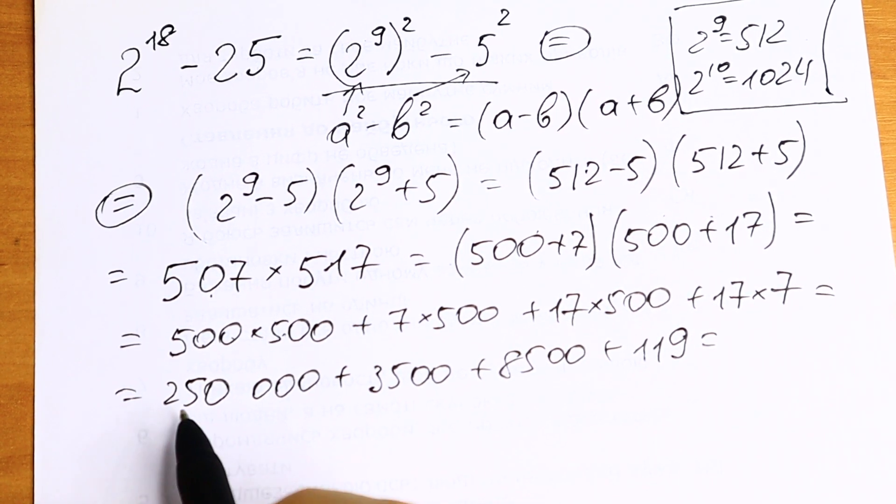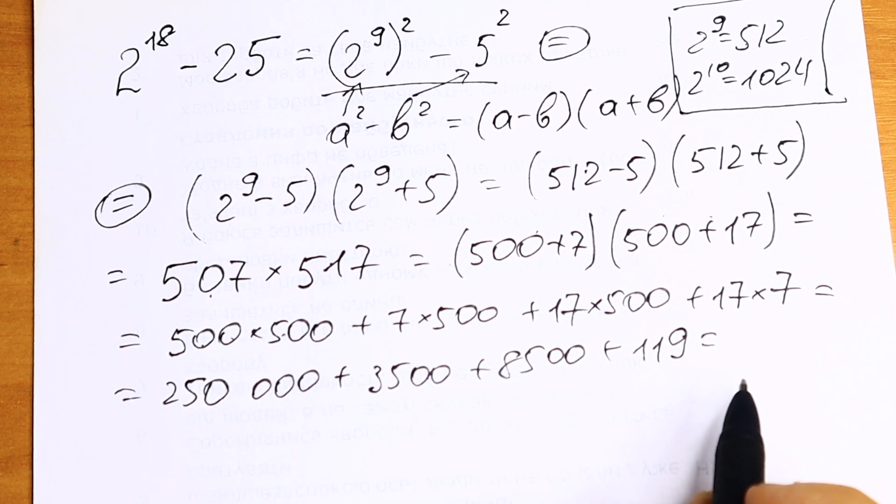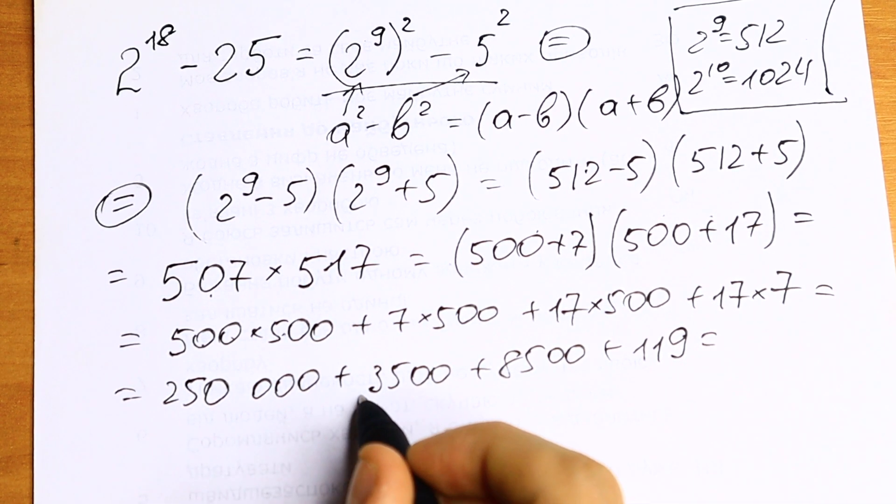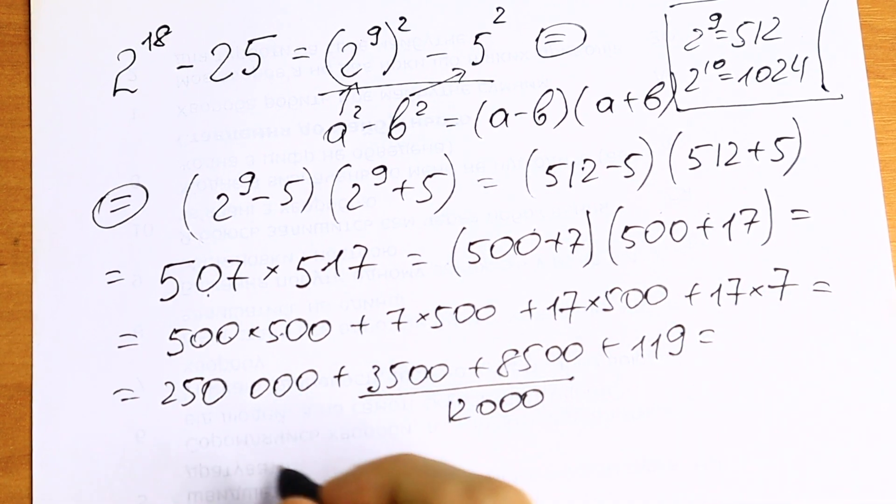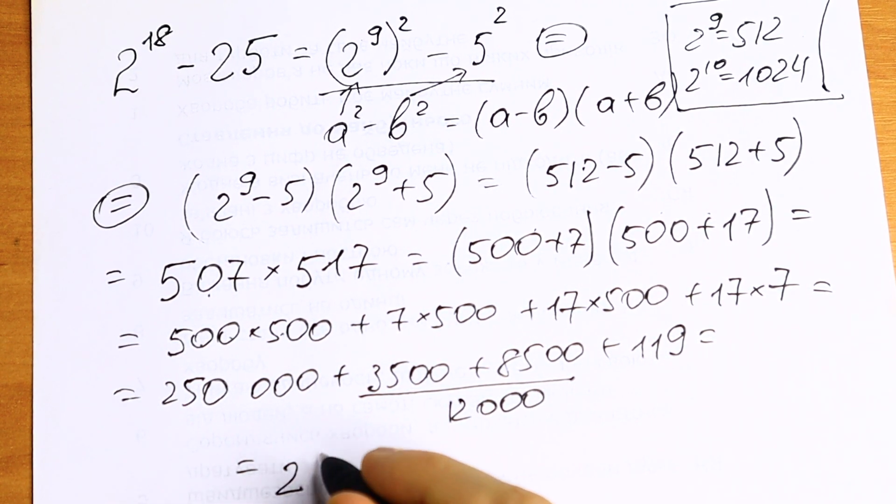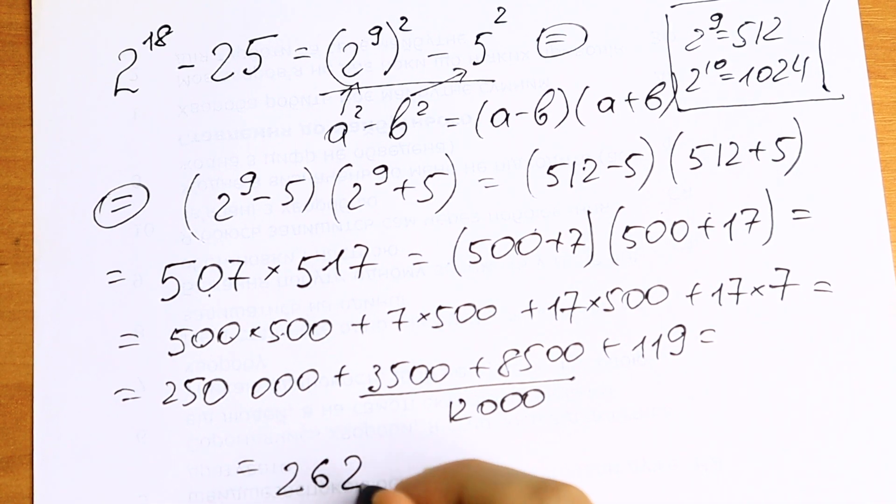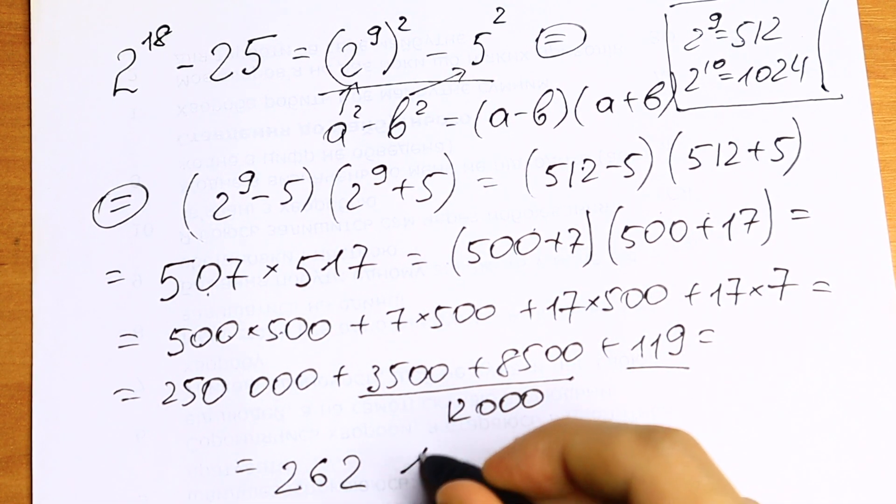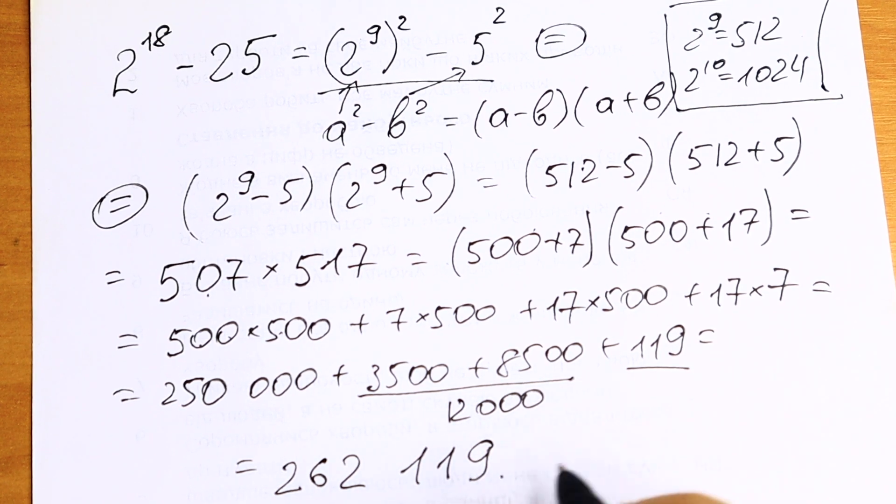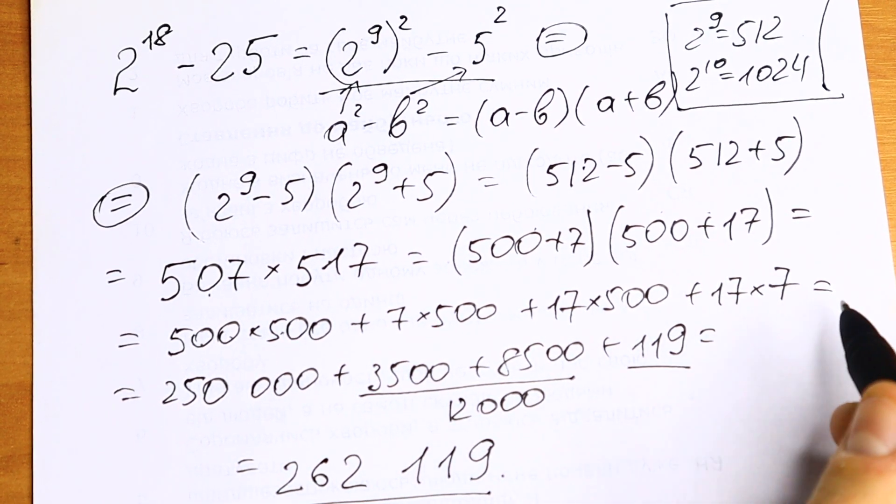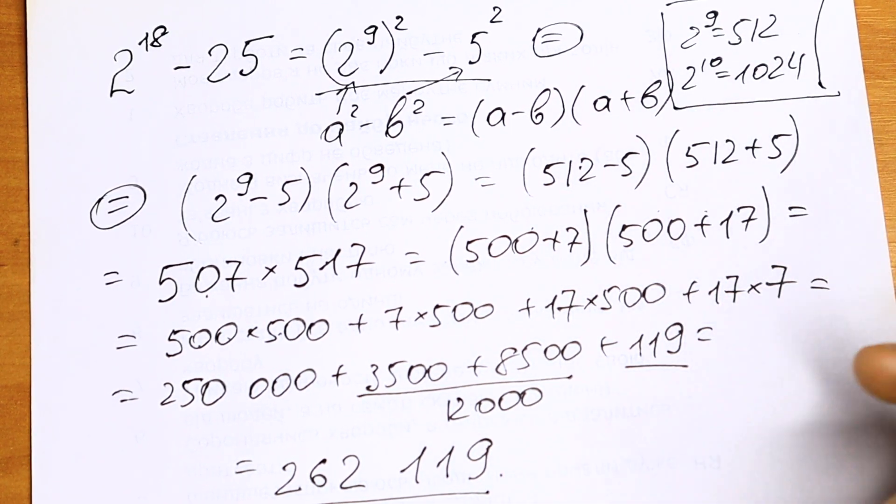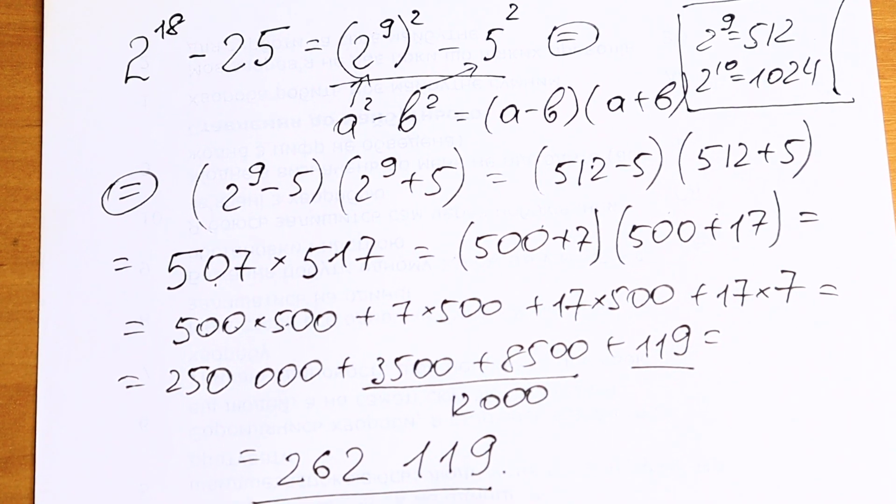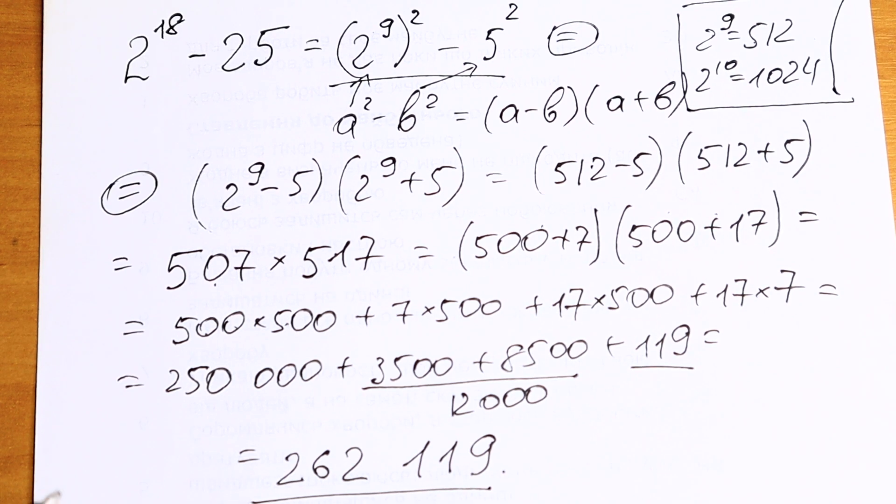So the last step to add all of these elements. As you can see, we will have right here we will have 12,000. And we need to add this. If we are talking about 1000 we will have 262,000. And right here 119. And this will be our answer. Of course you can check it. Learn this rule, remember this rule. And thank you for watching and see you in the next videos.